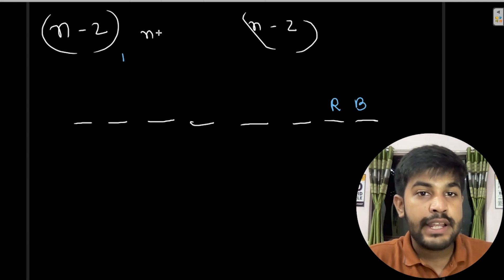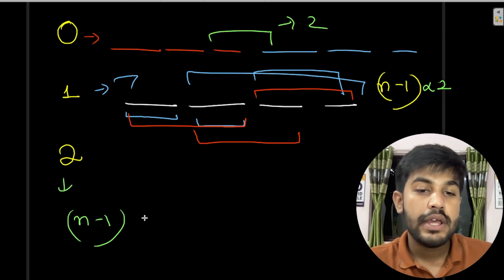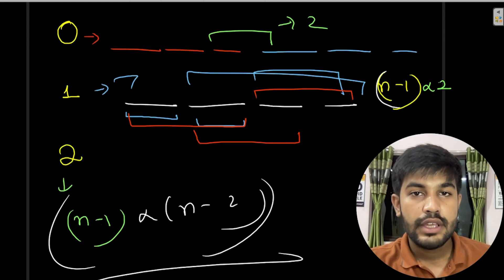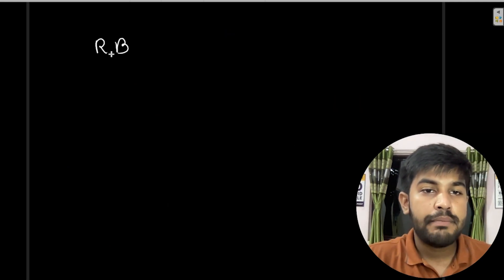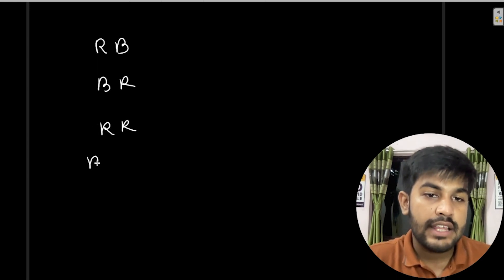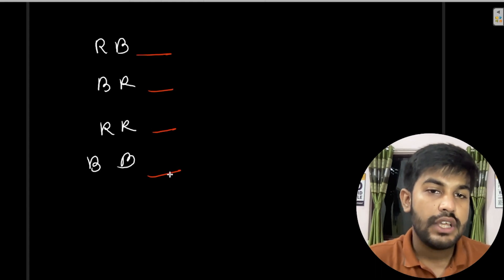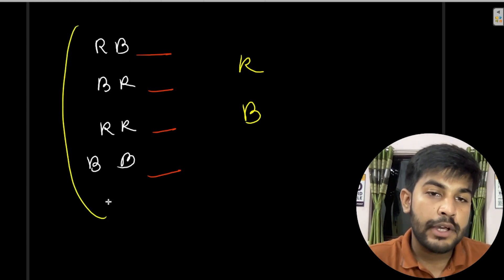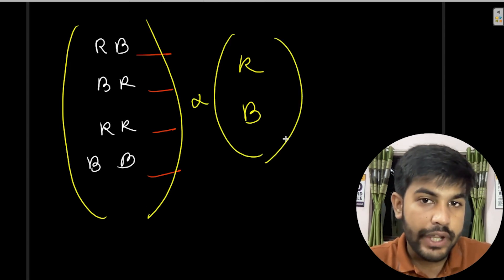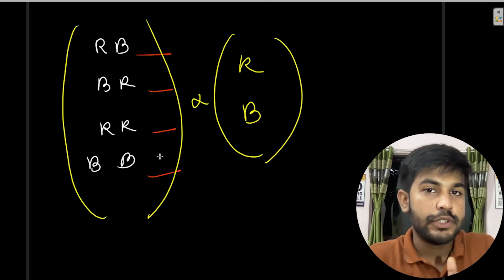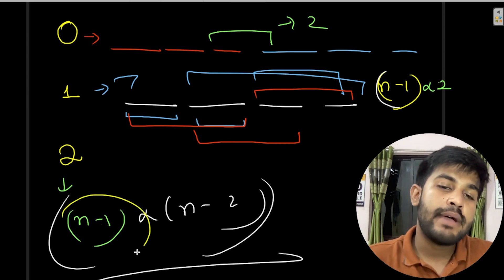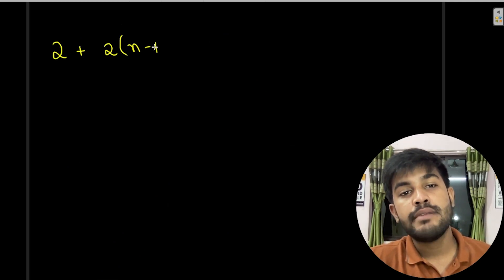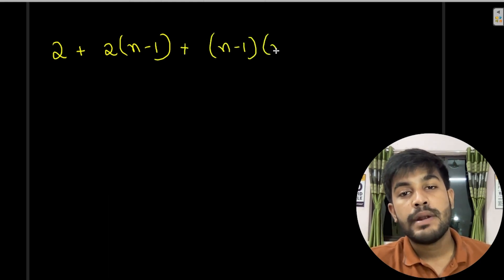To illustrate: for a pair RB placed at one of the n-1 positions, with n-2 remaining positions each colorable in two ways — we get (n-1)×(n-2) combinations. The full formula is therefore: 2 + 2×(n-1) + (n-1)×(n-2).